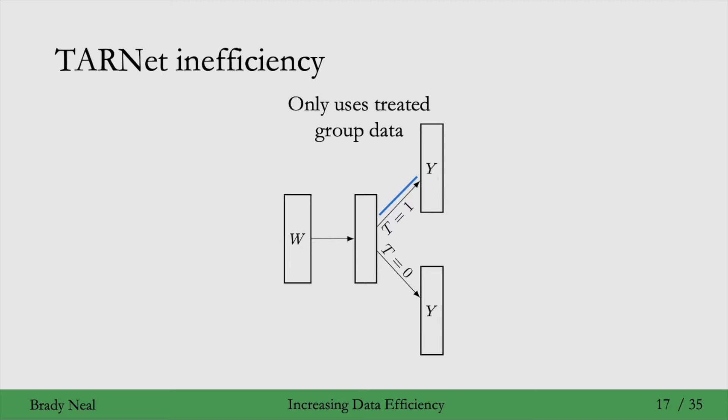The head that branches off for the treatment group only uses the treatment group data. The subnetwork for that head is only trained using treatment group data. Similarly, the subnetwork for the T equals zero head is only trained using the control group data.